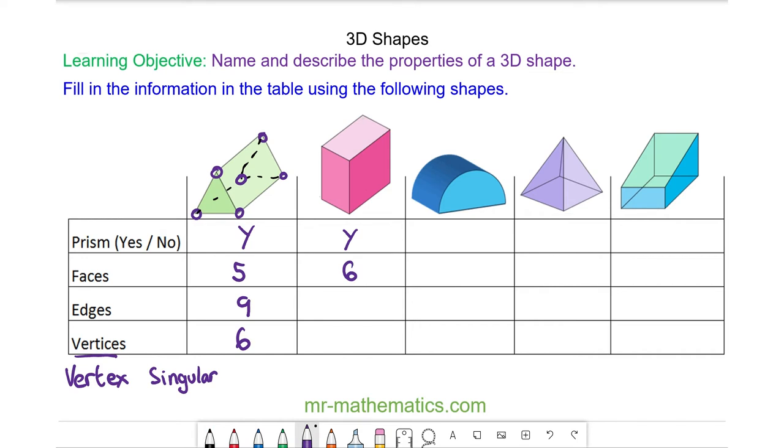To count the number of edges we have one, two, three, four, five, six, seven, eight, nine. We also need to include the hidden edges, ten, eleven and twelve.